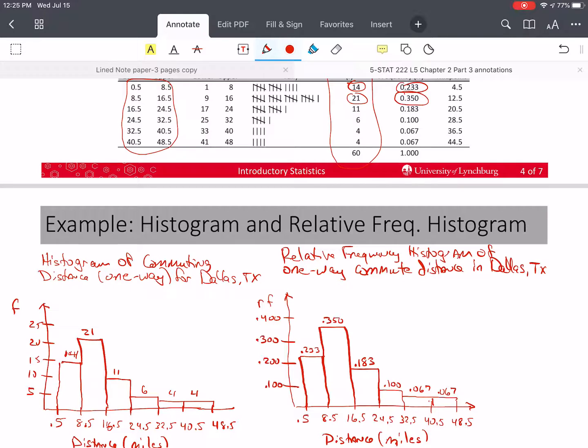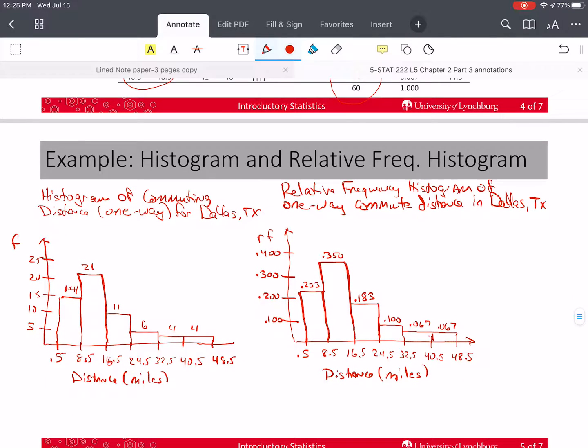So I promised to talk about the different ways that you can label this horizontal axis. And by the way, you can do these horizontally. You can flip them so that they're horizontal and people do that. I prefer not to, but it is possible. There's nothing wrong with that. So these were the boundaries.